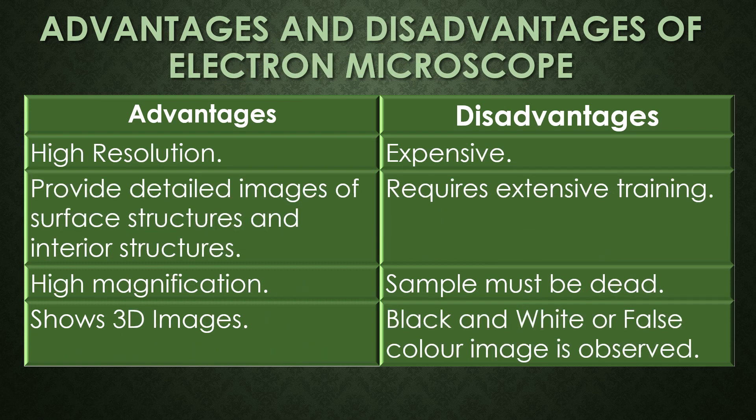The electron microscope has four advantages and four disadvantages. Advantages: resolution is high, it provides detailed images of surface and interior structures, magnification is high, and it shows a three-dimensional image of the object. Disadvantages: it is expensive, it requires extensive training and skilled personnel, the sample must be dead (whereas in the light microscope both live and dead specimens can be visualized), and it shows only black and white or false-colored images.